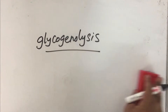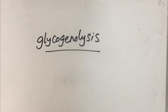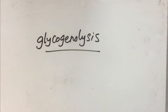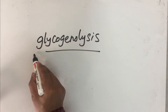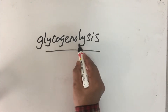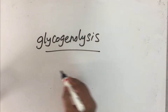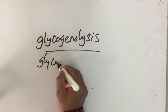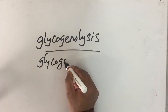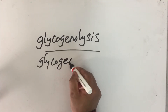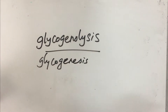Now we are going to look at the metabolism of glycogen. The metabolism of glycogen is regularly happening in liver as well as in muscle. In liver, the metabolism of glycogen involves synthesis as well as degradation. The word glycogenolysis stands for breakdown of glycogen, while the synthesis of glycogen is called glycogenesis.